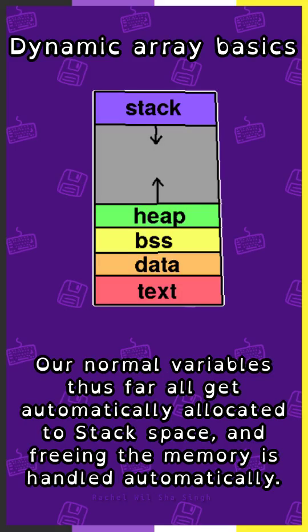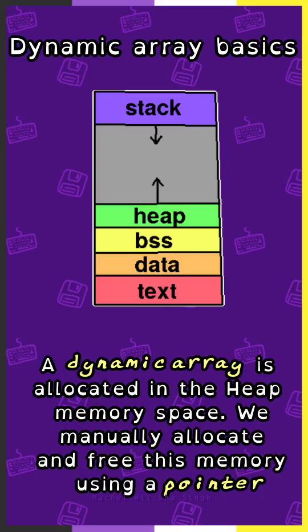Our normal variables thus far all get automatically allocated to stack space, and freeing the memory is handled automatically. A dynamic array is allocated in the heap memory space. We manually allocate and free this memory using a pointer.